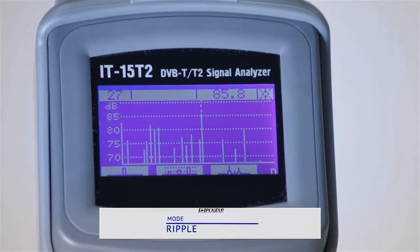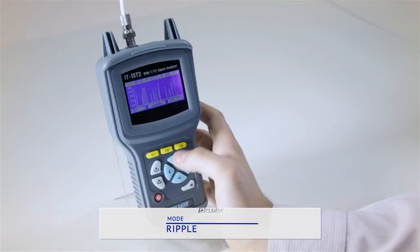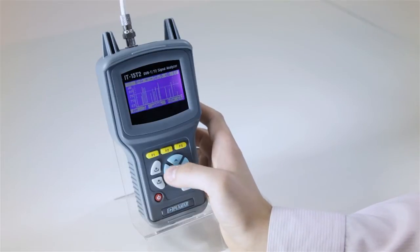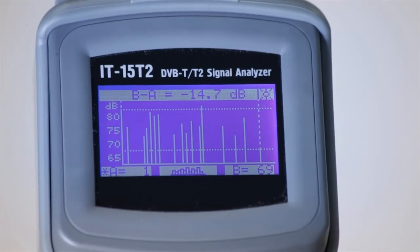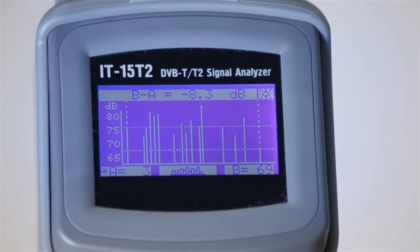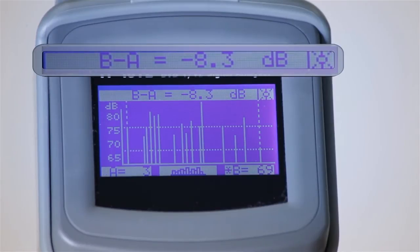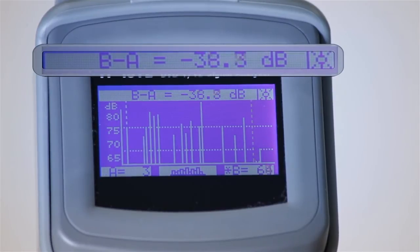The next mode is ripple. In this mode, you can measure the difference between levels of two selected channels. This is how you can set the markers to the channels to be measured. The difference between the levels is shown here. This mode is especially helpful in measurement of the level of ripple across all the channels.